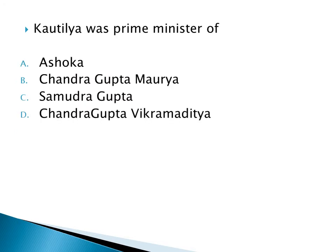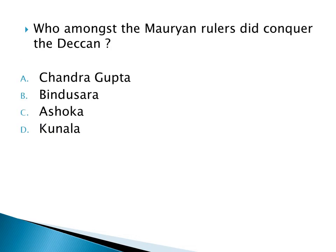In whose period was Kautilya the Prime Minister? Option A: Ashoka, Option B: Chandragupta Maurya, Option C: Samudra Gupta, Option D: Chandragupta Vikramaditya. The right answer is Option B: Chandragupta Maurya.